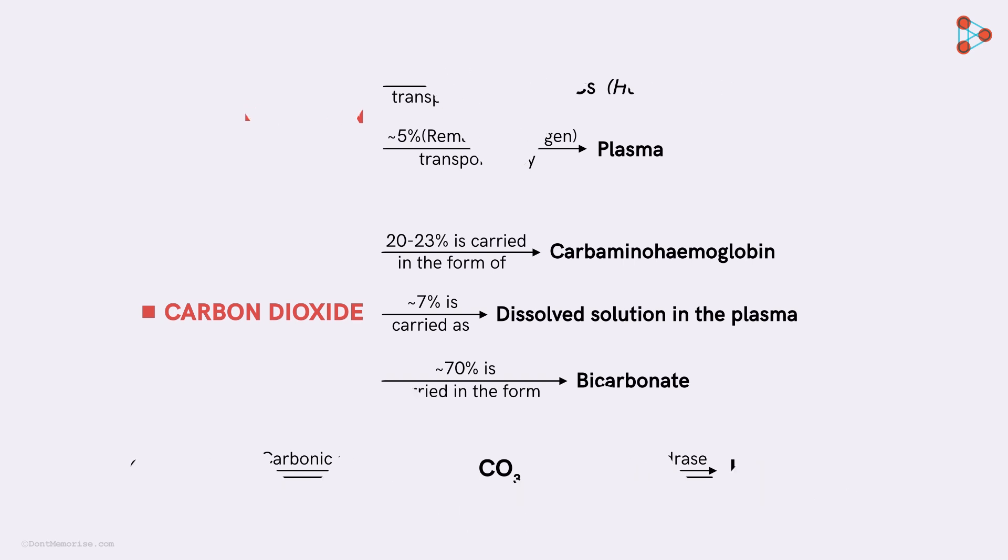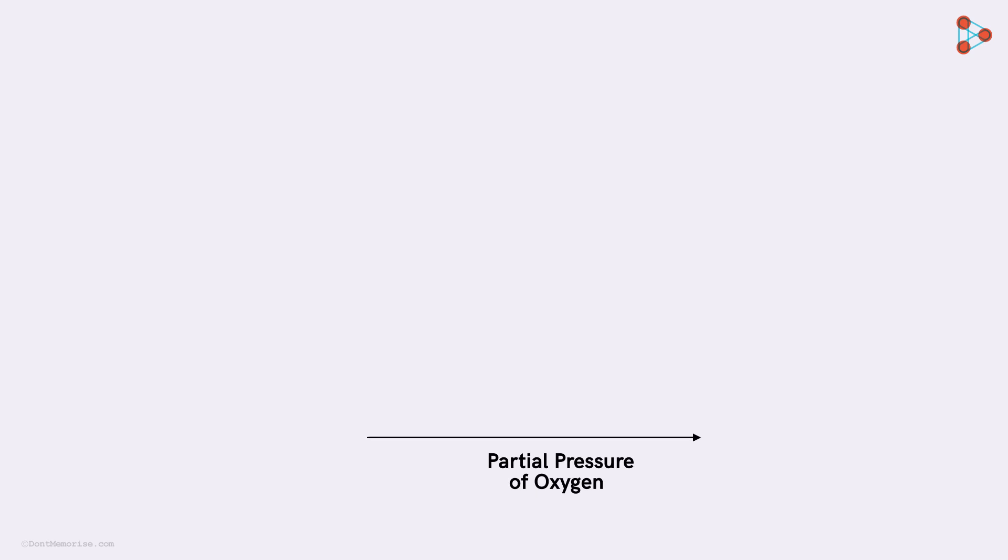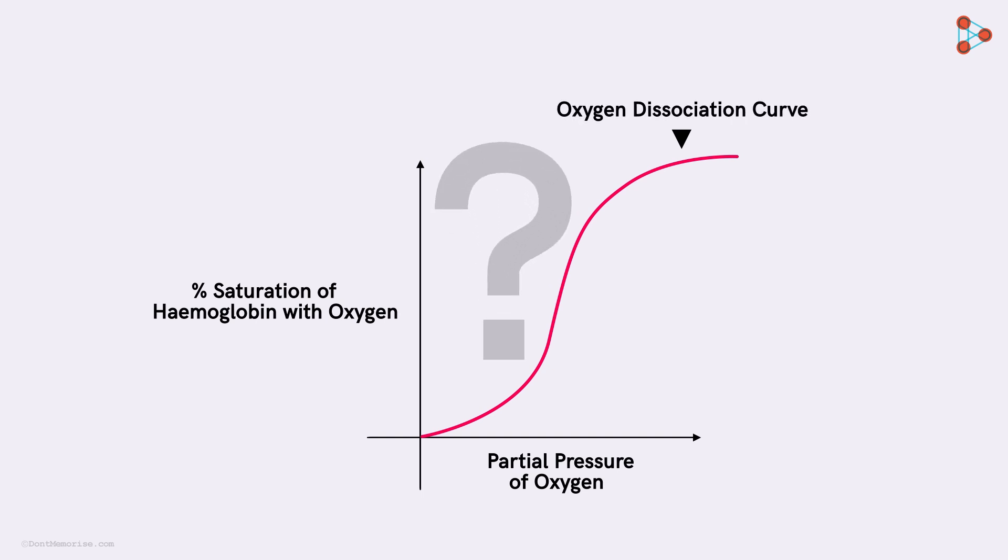Now, if we plot a graph of partial pressure of oxygen against the percent saturation of hemoglobin with oxygen, then a sigmoid curve is obtained. This is called the oxygen dissociation curve. And is this really very useful? Well, it has a significant role to play in the study of several factors that affect breathing. But we will discuss about this graph in detail in the higher grades.